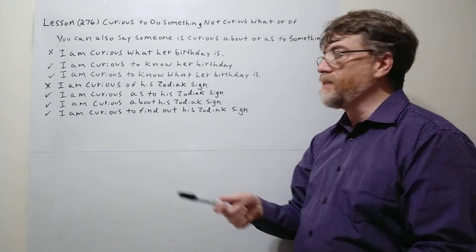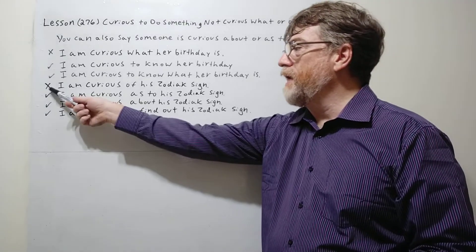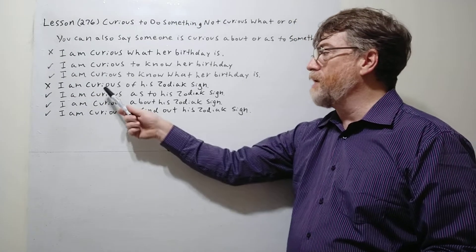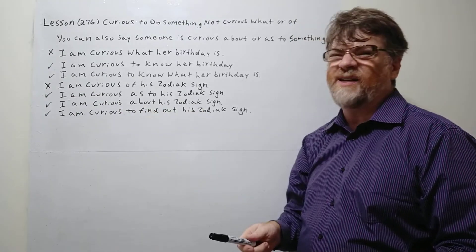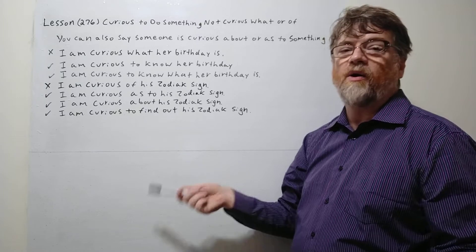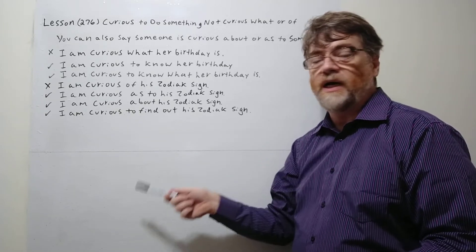Let's take a look at the next example here. Again with the X, this is wrong. If somebody said I am curious of his zodiac sign, that's weird and awkward. We don't say curious of in this sense.